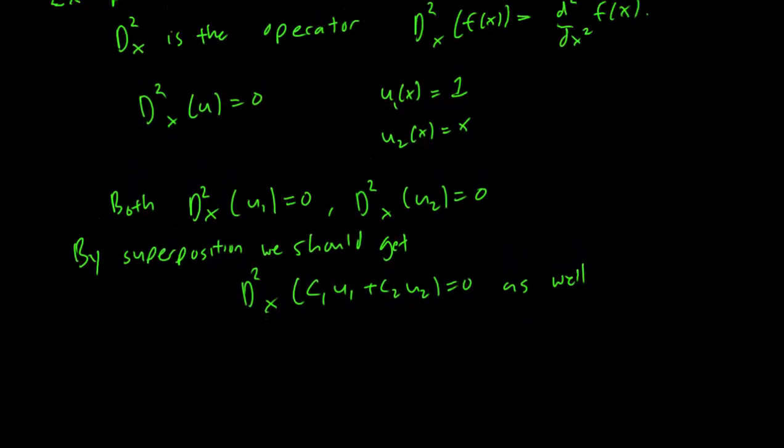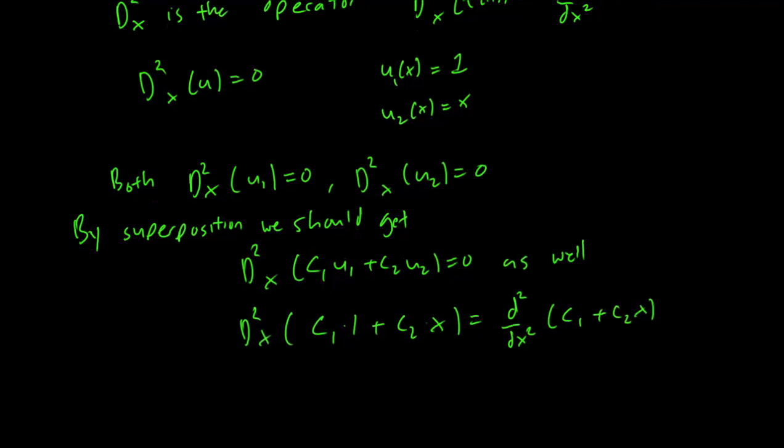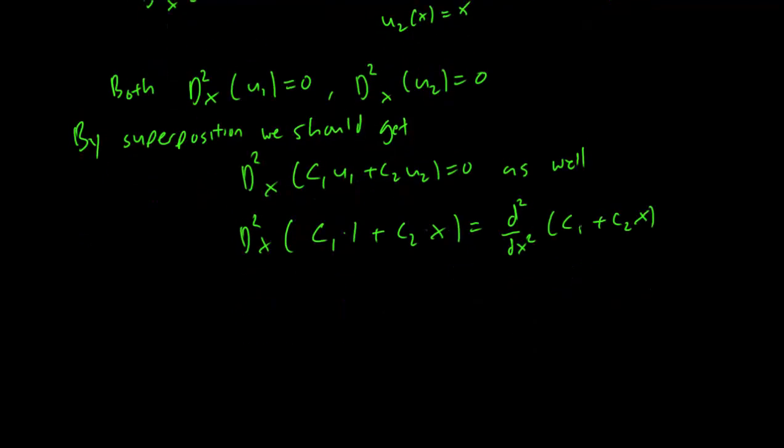So let's check it. U₁ is 1 and u₂ is x, so we have D²ₓ(C₁ · 1 + C₂ · x). This is equal to the second derivative of C₁ + C₂x. If you differentiate C₁ once, it's a constant, so you get 0. If you differentiate C₂x once, you get C₂. If you differentiate again, you get 0.